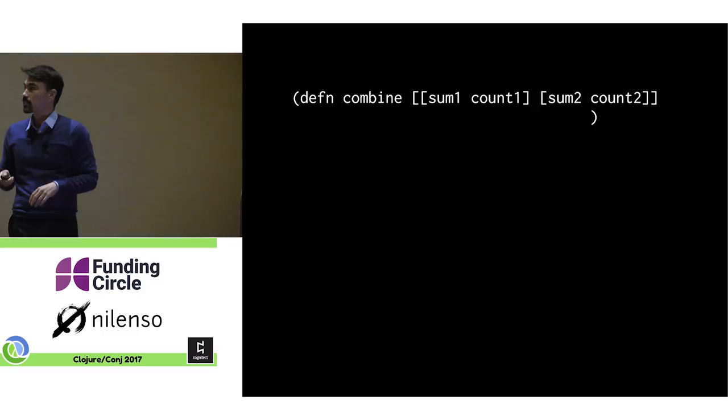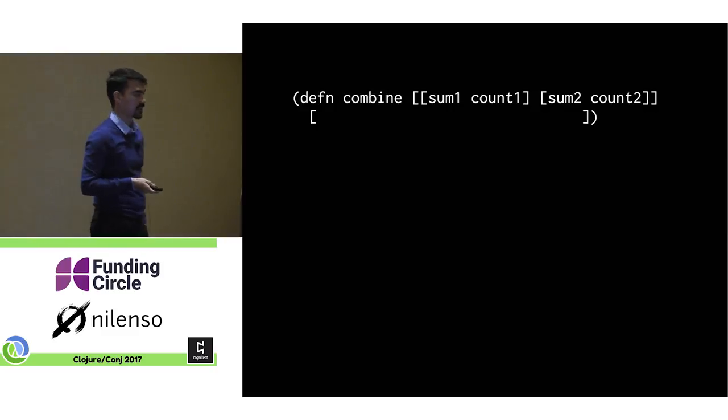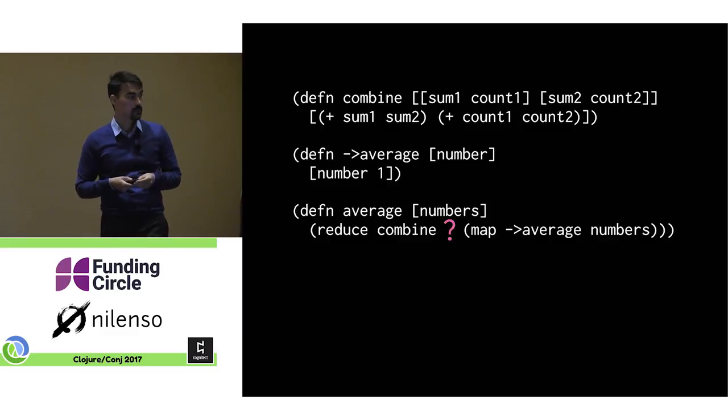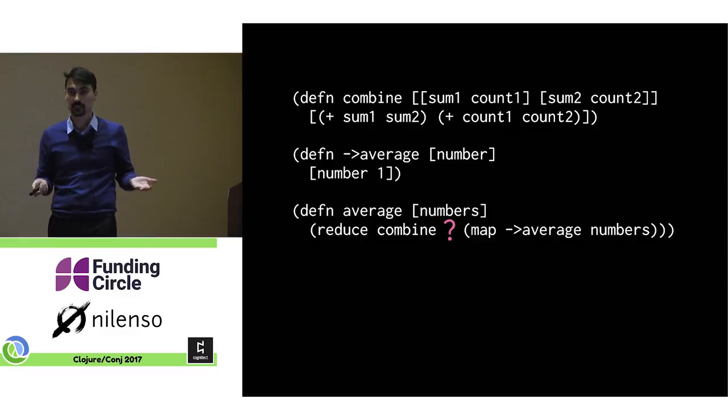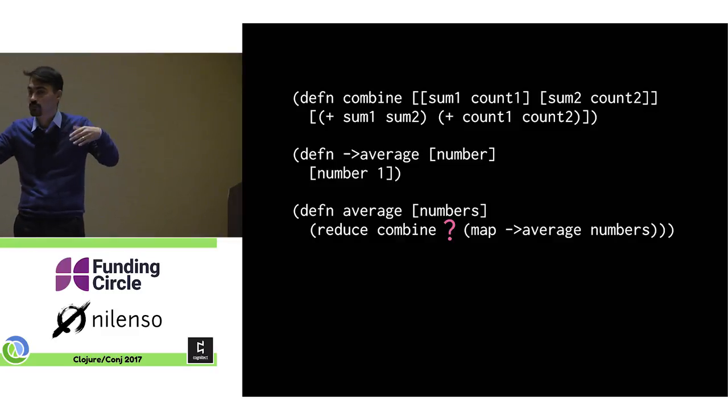And so we also know that the return value has to be that same type. How do we get it? Well we know we're adding up. Before we were grouping from the left. Now we're grouping arbitrarily. So we're just going to sum up the sums and sum up the counts. Now we can create a function called to average, which is going to take a number and turn it into an average. And so a single number, the average, the denominator would be one. So we just derive that as tuple of number and it's n1. And then we can write a function called average, which takes that list of numbers and it maps to average over them. And then it can just reduce combine on them.